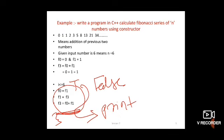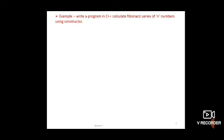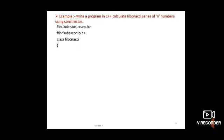Now see in detail how to write the program using OOP concepts and constructor. First include the header file iostream. Then declare the Fibonacci class: class keyword, class name Fibonacci, begin. Under the public section — since the constructor is always declared under public — declare the variables: int f0, f1, fib.